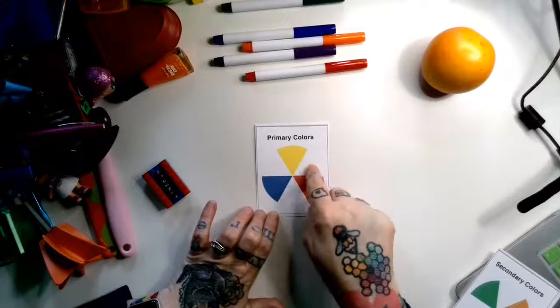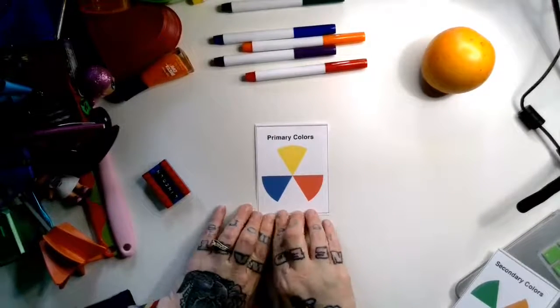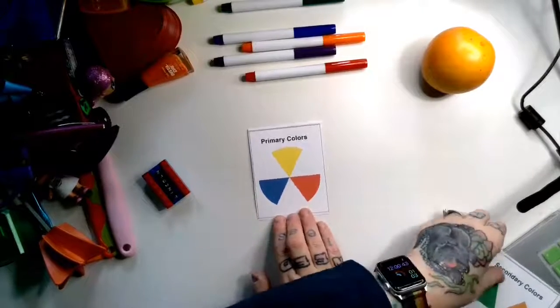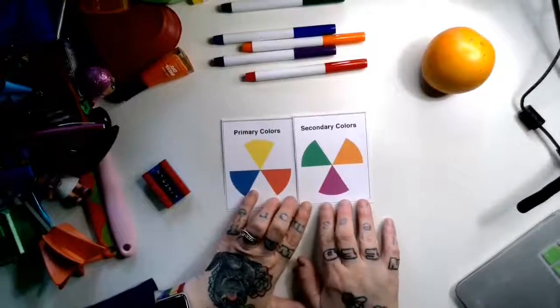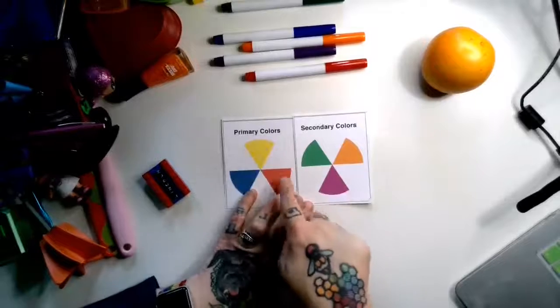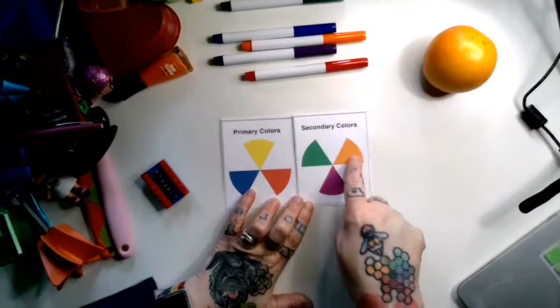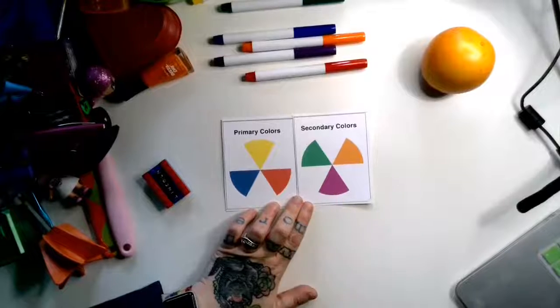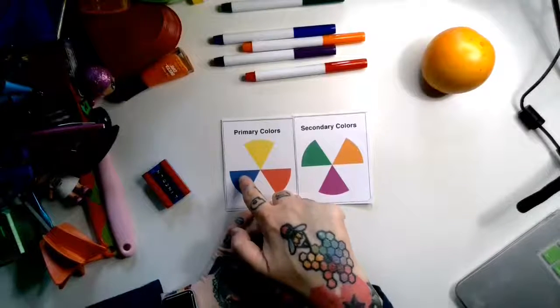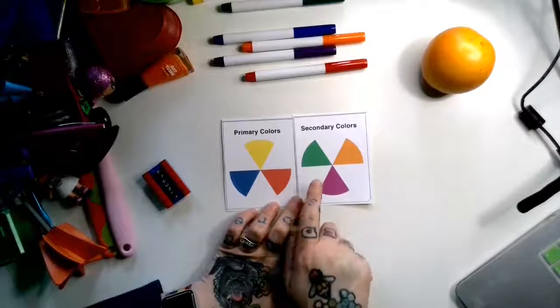And these three colors make up all the other colors in the rainbow, including our friends the secondary colors. So then we have yellow and red make orange, and blue and red make purple, and blue and yellow make green.